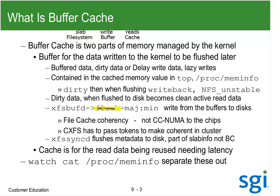This is file cache coherency. If I write into my page cache, I need the disk to be coherent. Maybe I'm in a mission critical situation and don't want to lose the data - I need to get it to the platter. CXFS has to pass tokens to a metadata server in the cluster to make things coherent. You can't have two processes on two different hosts writing the same file at the same time or it'll be scrambled up. There's also a daemon called XFS syncD, and that's what flushes the metadata - the inodes and directories - to disk.